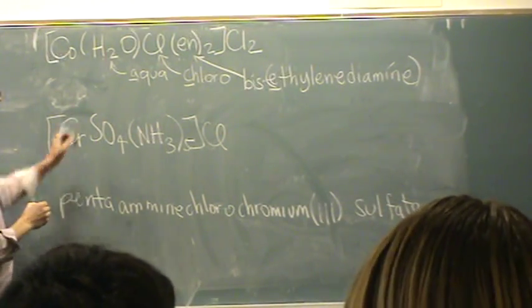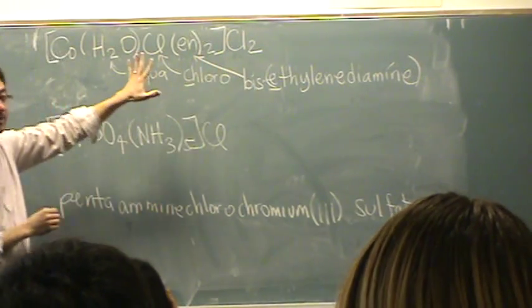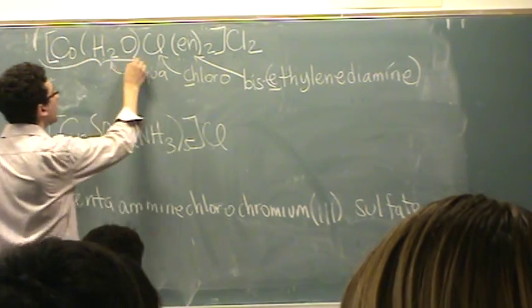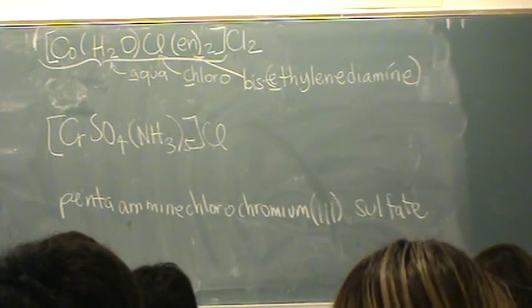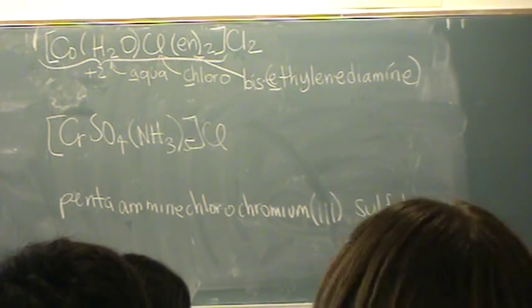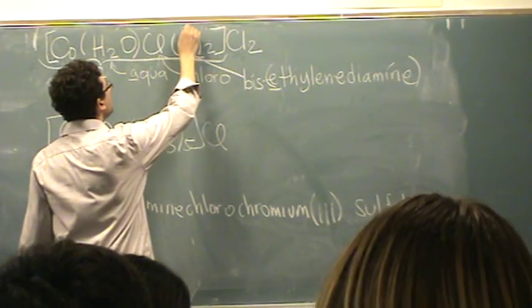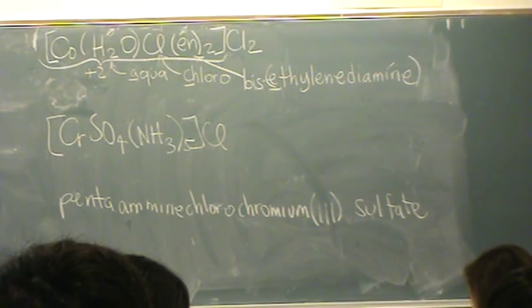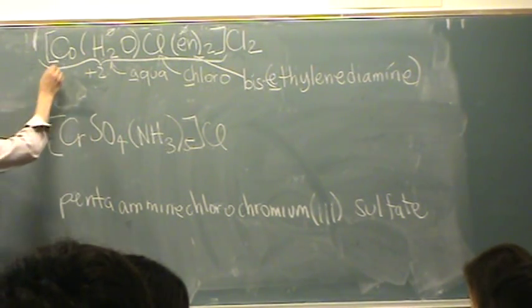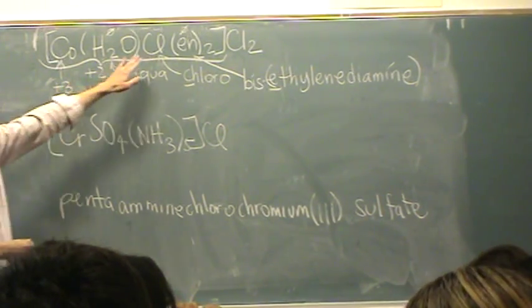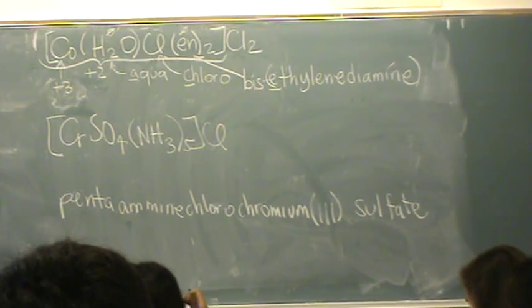What else do we got? This is going to be a blah blah blah chloride. Chlorine is the counter ion. We've got a cobalt. What is the overall charge in this whole bracket? It's going to be plus two, because this would be minus two from the two minus ones from chlorine. Ethylenediamine is neutral, zero. Chlorine is minus one. Water is neutral, zero. So what must cobalt be? This has got to be plus three.